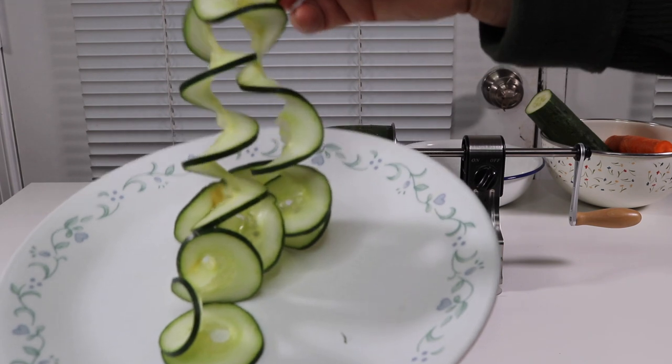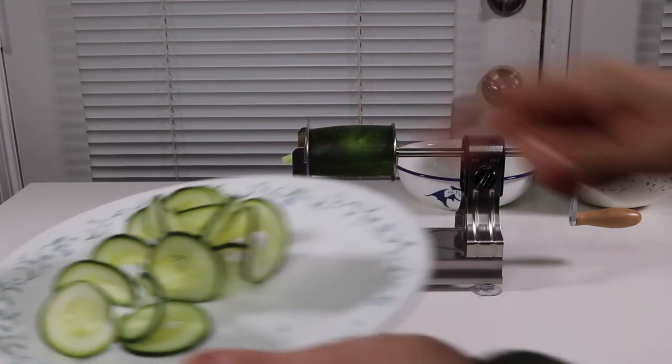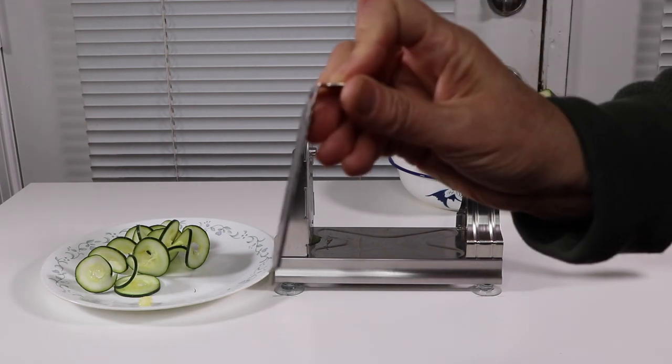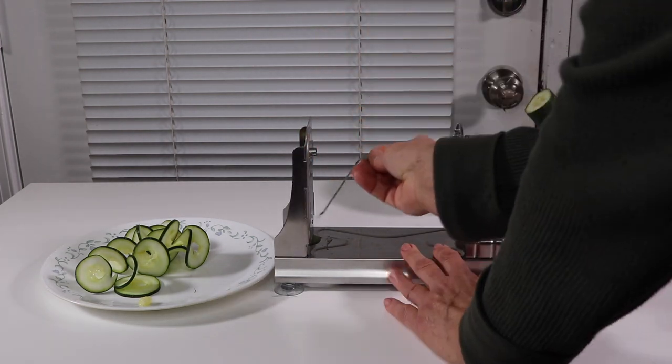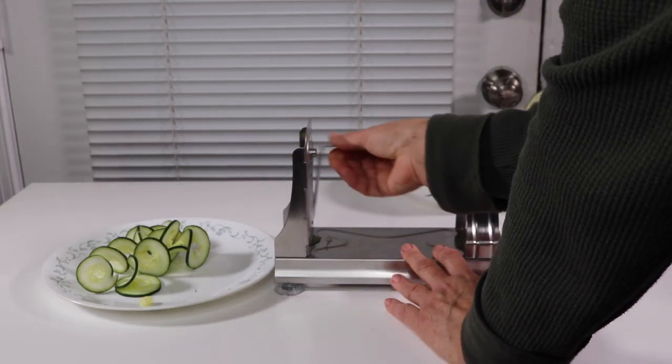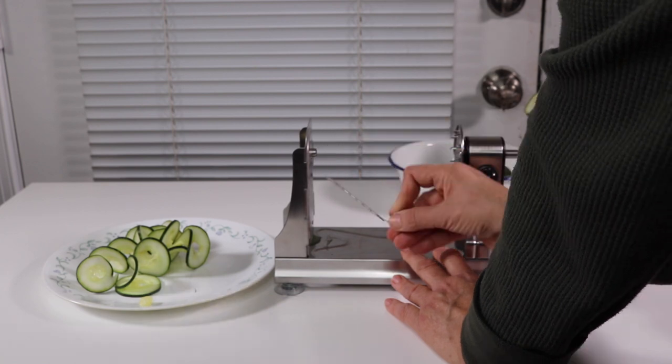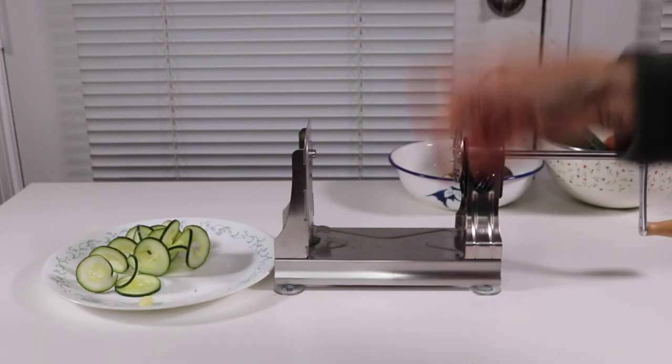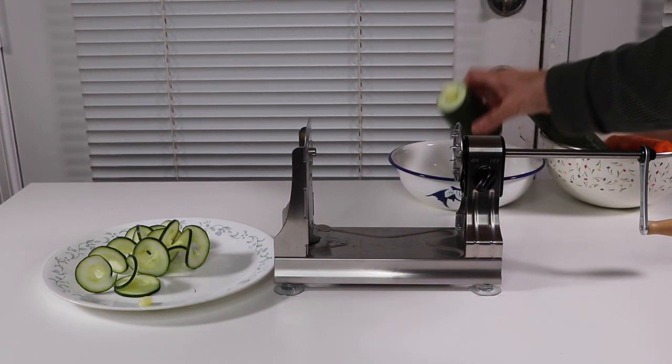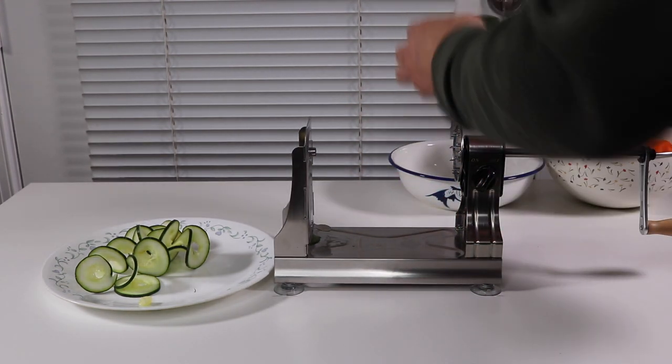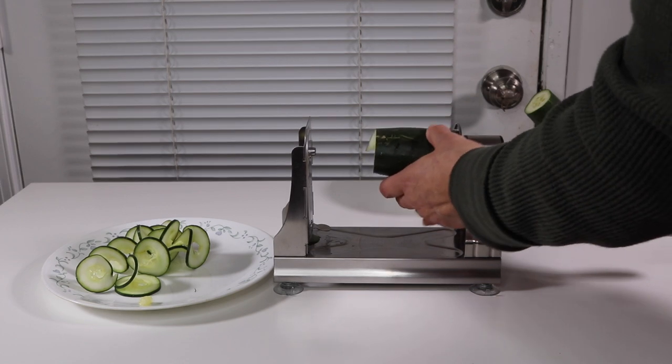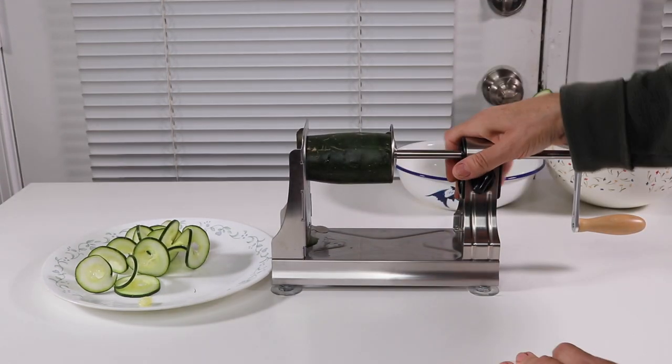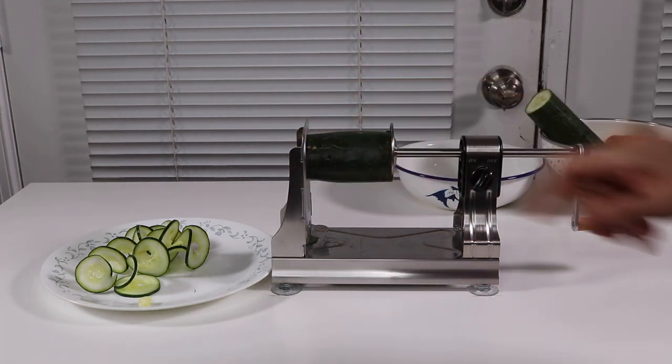Now we're going to do the same thing with this. We're going to use the smaller blade. We're going to take the smaller blade now and stick that in there. Fast and easy to change out. Now stick that on again and I'm going to do the thin cut.